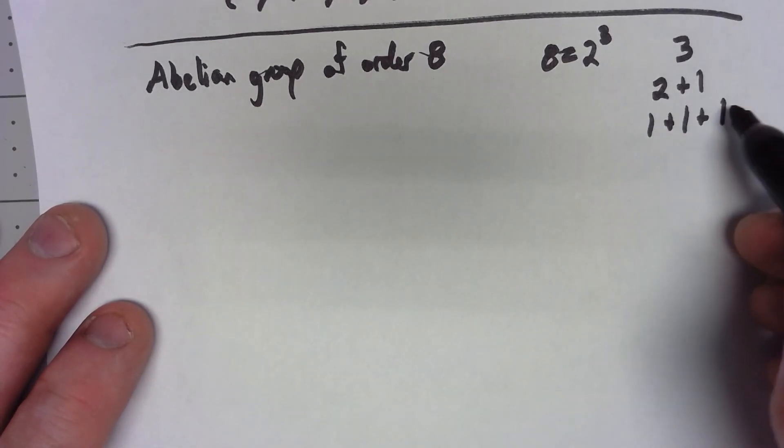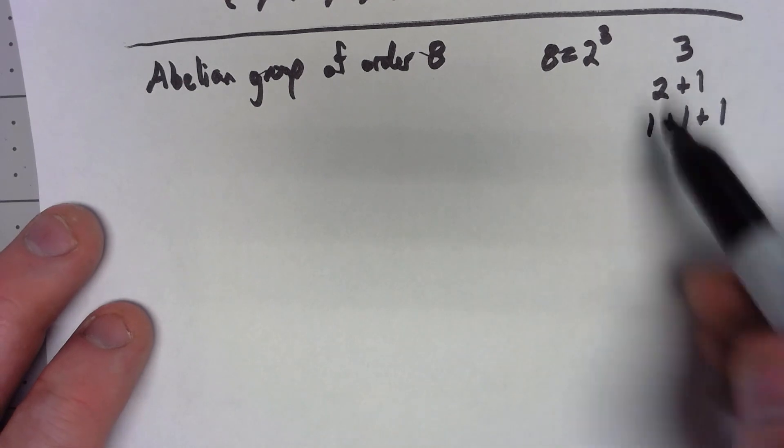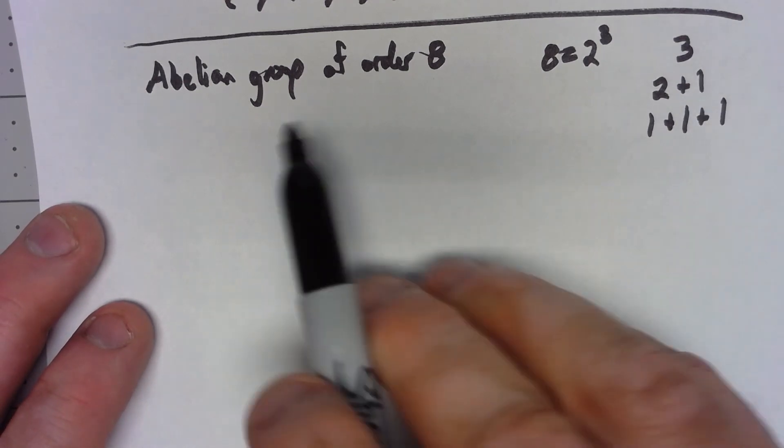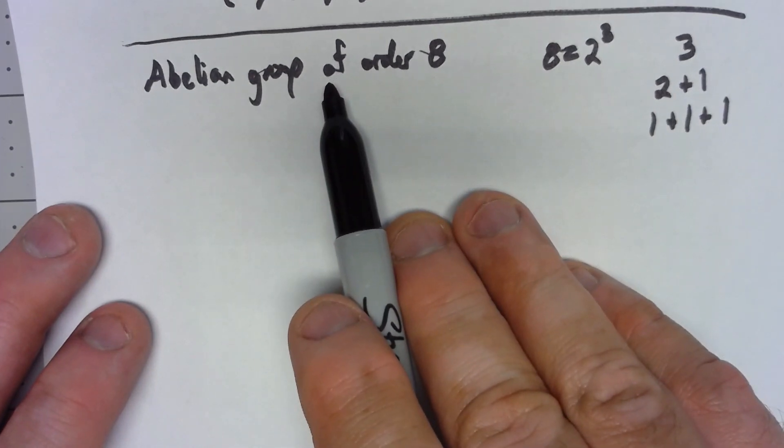If order doesn't matter, those are the only ways we can add positive numbers together to get 3. So what this says is that there are 3 different possibilities up to isomorphism as to what this abelian group could be.